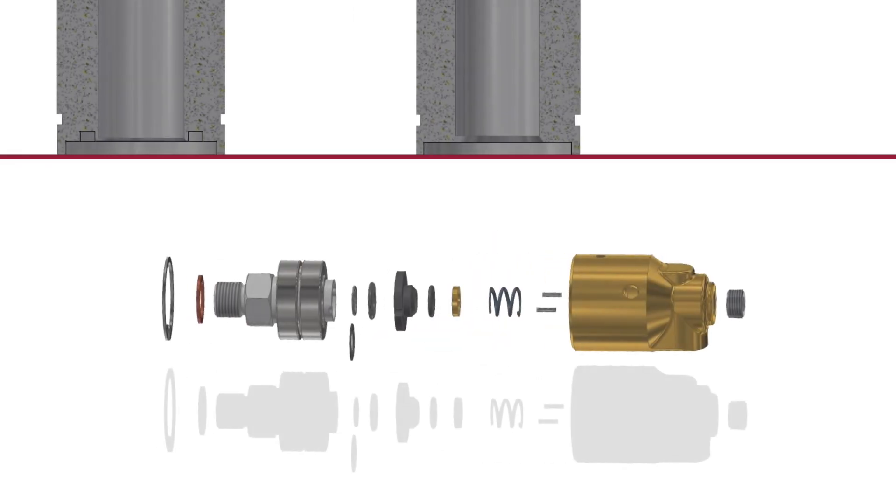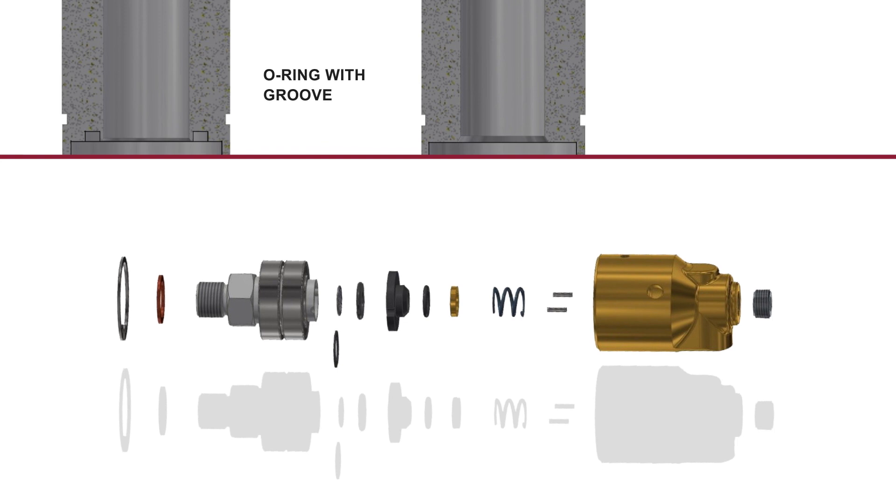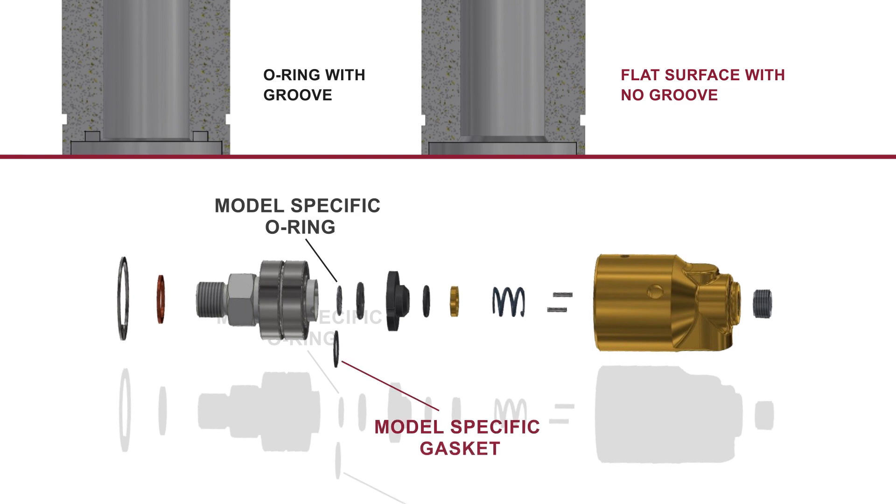If your rotor package has an O-Ring with a groove, use the O-Ring. If your rotor package is a flat surface with no groove, use the gasket.